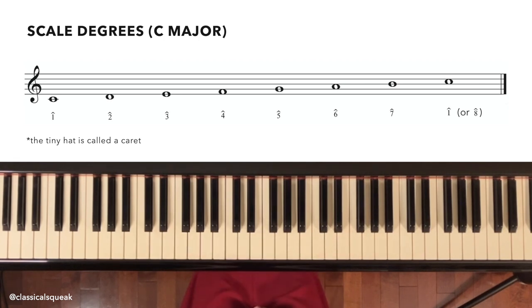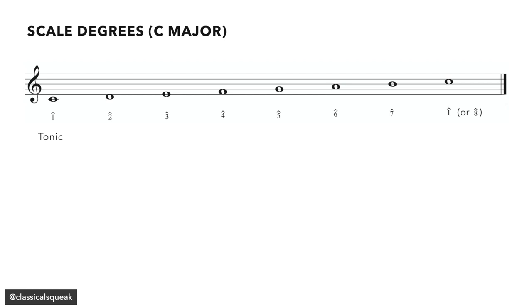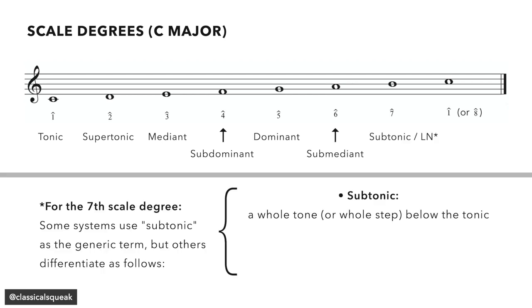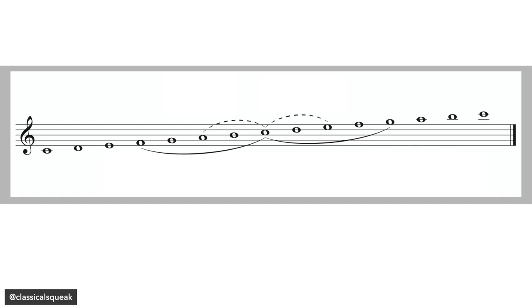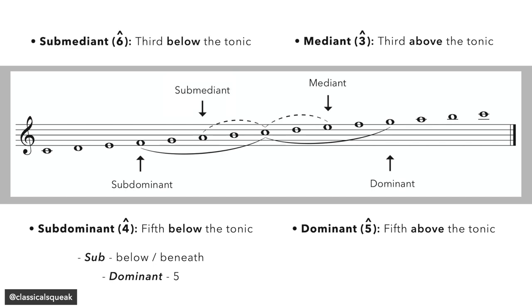And here is a C major scale with 1 through 7. The tiny hat on top to imply a scale degree, and you might see 8 or 1 for the upper octave as well. Little hat is called a caret. I'm approaching this from a classical background, so we use Roman numerals to show chords built on the scale degrees. As for the note names, tonic is the first note, the second note is supertonic, third is mediant, fourth is subdominant, fifth is dominant, sixth is submediant, seventh is subtonic, or if it is specifically a half-step or semitone below the tonic, it is the leading note or leading tone.